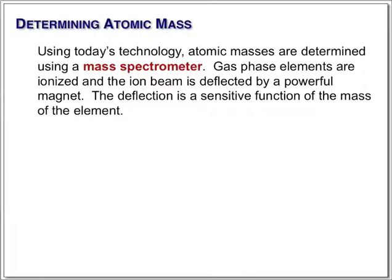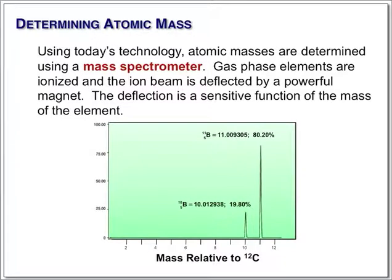This is some data for boron. Boron consists of two isotopes, boron-11 and boron-10. You'll note the exact mass of boron-11 is 11.09305, and it consists of 80% of this isotope in the Earth's crust.